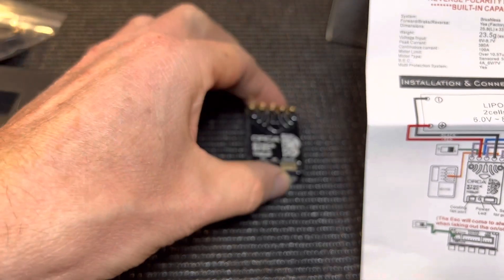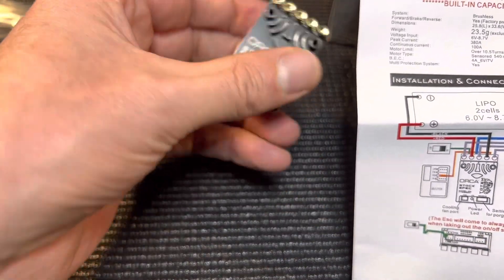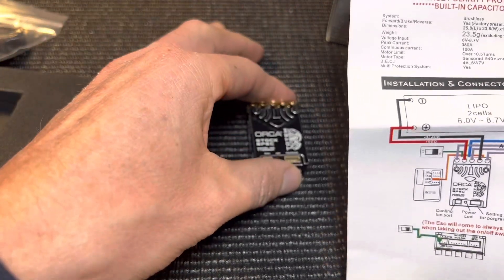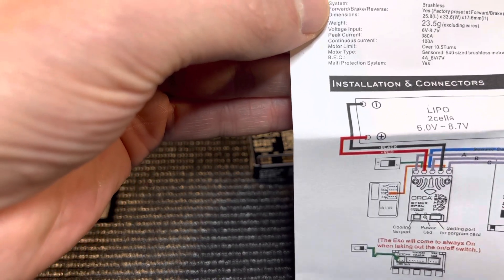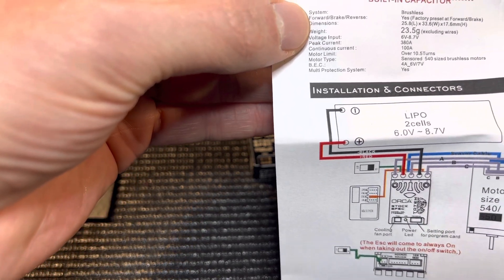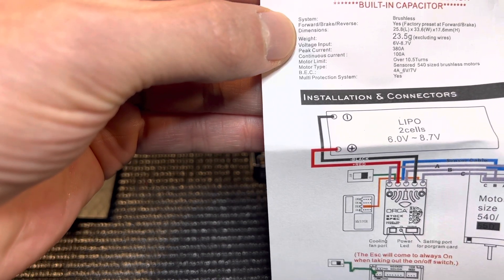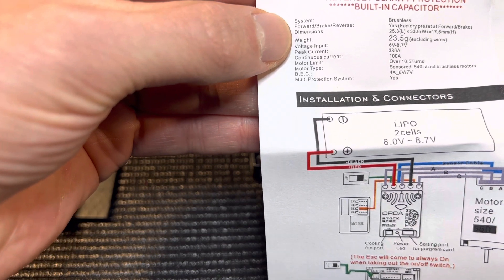Built-in capacitor, which is nice. So if you're looking for a nice clean install, you're not going to have a capacitor pack on the flip side. I think you won't be able to use a larger capacitor, so whatever it's got in there is what you're going to use. Brushless only, forward brake reverse yes, factory preset forward brake. Dimensions 25.8 by 33.6 by 17.6, that's obviously in millimeters.